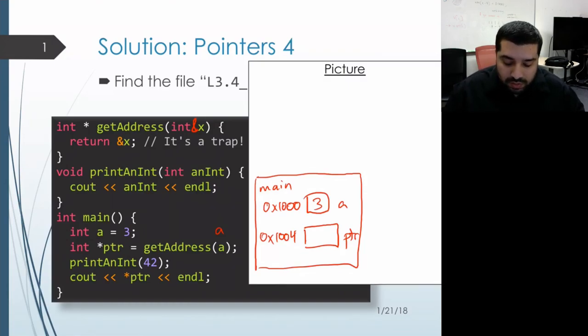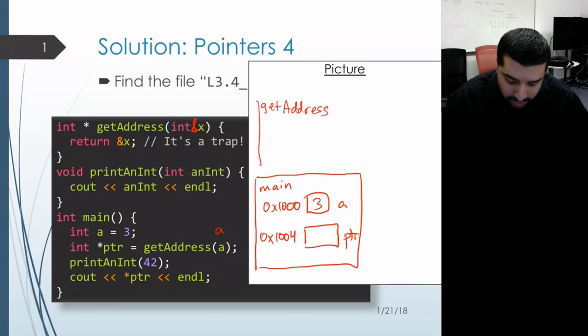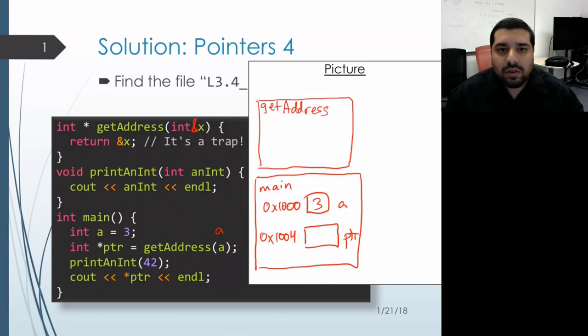Now the next thing that happens is that we get an activation record for our getAddress. And within that, we have our local variables and parameters. Now, X is conceptually a reference. So that means that it doesn't act as if it has its own memory. So the way that I like to draw that is that I just put the name X inside the activation record. And then I put a dotted line to the object that it's aliasing.